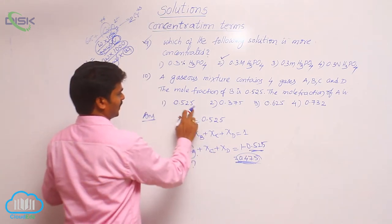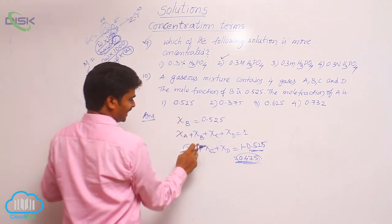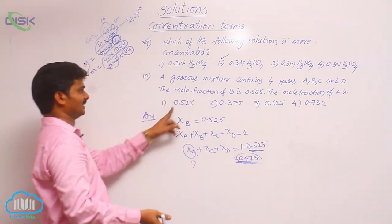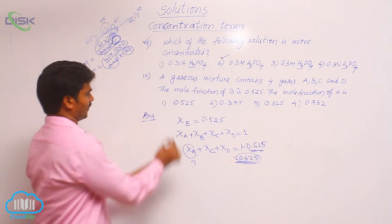0.525 is the mole fraction of B. Then these 3 terms contribute only 0.475. But it is given 0.525. It is a wrong option.